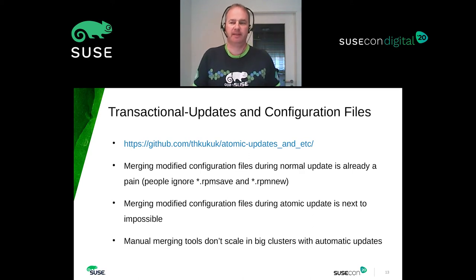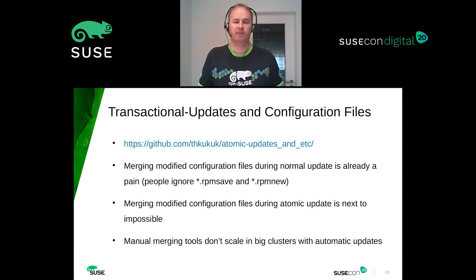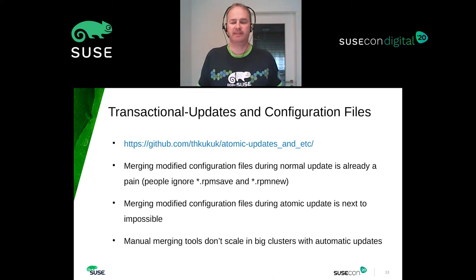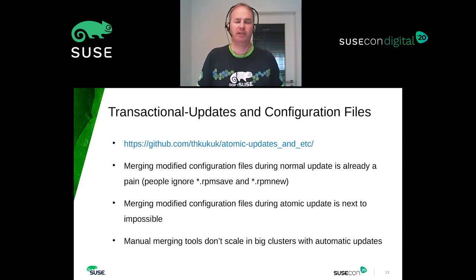Transactional updates have even more problems with modified configuration files because you don't see them until you reboot, and you can modify them at the same time as an update in the background is modifying them — so merging at the next boot is next to impossible. If you think about the typical problem reports on mailing lists: 'service XYZ doesn't work after the last update' — the typical answer is 'did you check for RPM .rpmsave and .rpmnew files?' and the answer is 'oops, now it's working, thanks.' All this manual merging does not scale with a cluster, so we need something new — and we also want something more robust for our traditional OpenSUSE and Enterprise distributions.